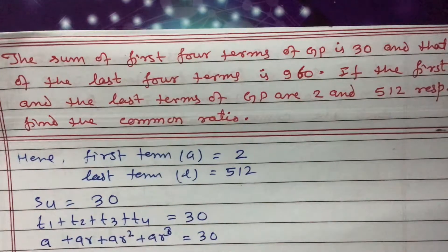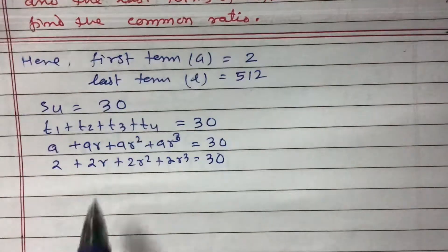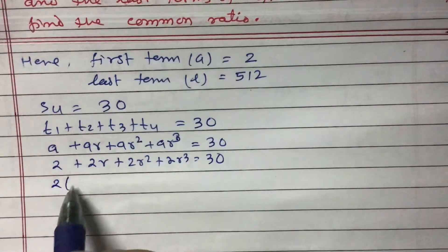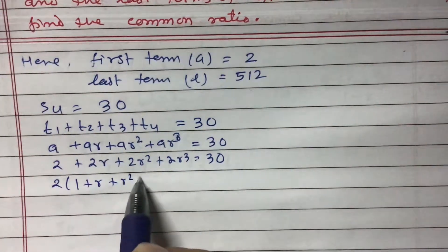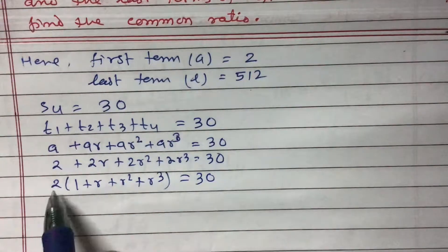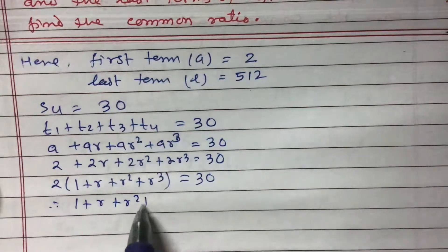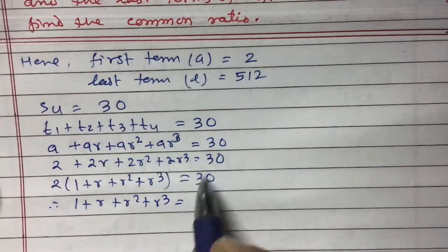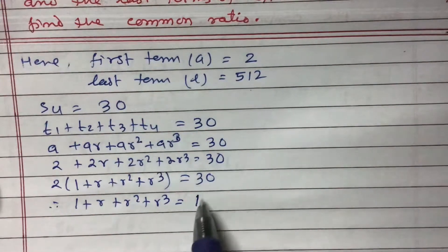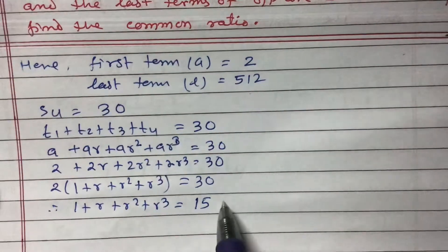The value of a is 2, so we substitute: 2 + 2r + 2r² + 2r³ equals 30. Taking 2 as common, we get 1 + r + r² + r³ equals 30 divided by 2, which is 15. So 1 + r + r² + r³ = 15.